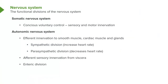Besides the anatomical divisions of the nervous system, there are also functional divisions: the somatic nervous system and the autonomic nervous system. The somatic nervous system consists of that part of the nervous system that we are consciously aware of, such as the movement of our body, the contraction of skeletal muscle in our limbs, and sensory information such as temperature, touch, and pain — all that information we are aware of.